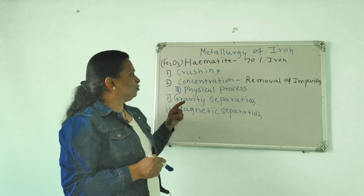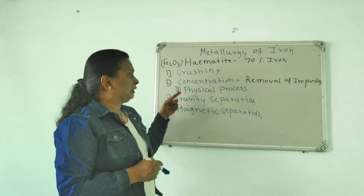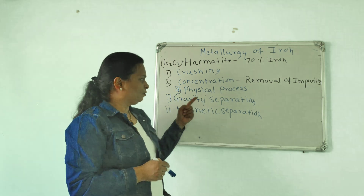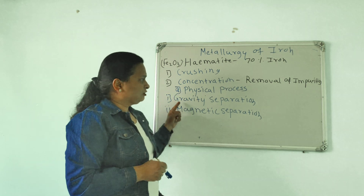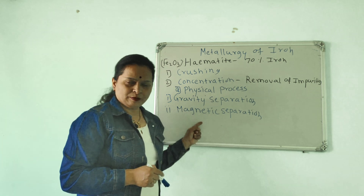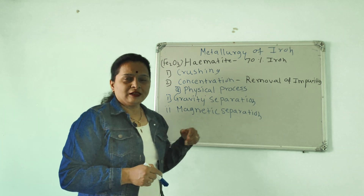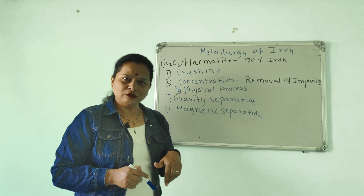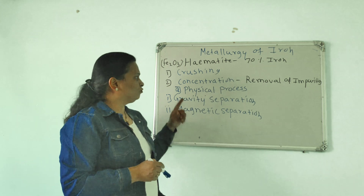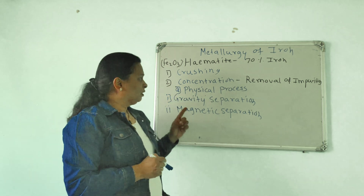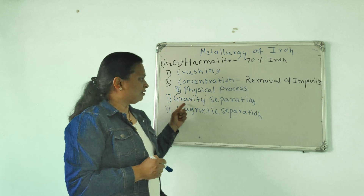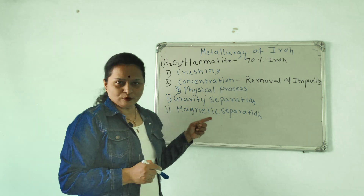For hematite ore, concentration is done by two different ways: physical process — first is gravity separation and second is magnetic separation — and then the chemical process used for concentration of ore.